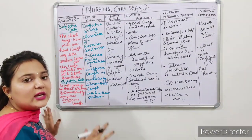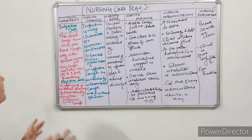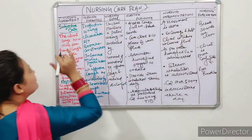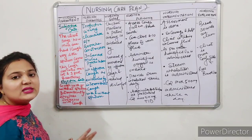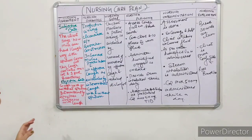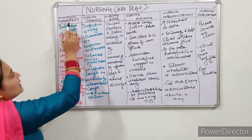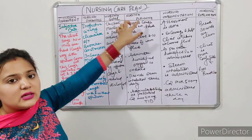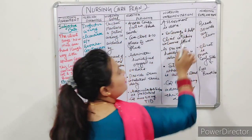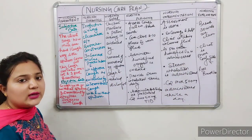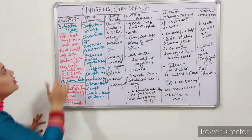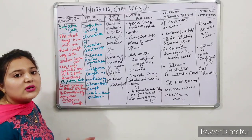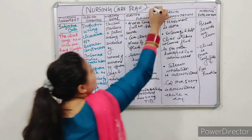Now we start the nursing care plan. I already told you the steps. Before writing, note that the word 'nursing' must be added before every step: nursing assessment, nursing diagnosis, nursing goal, nursing planning, nursing implementation, and nursing evaluation. Adding 'nursing' is very important. In assessment, we collect two types of data — subjective and objective. We are studying the nursing care plan for bronchoconstriction.